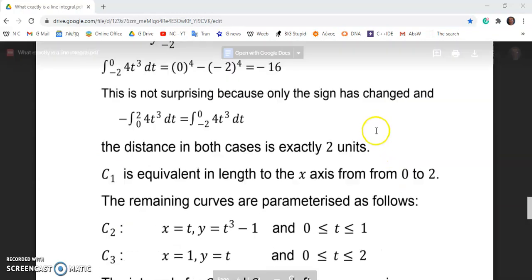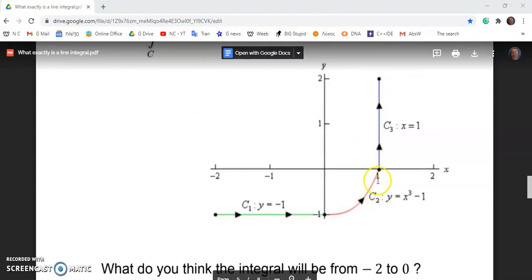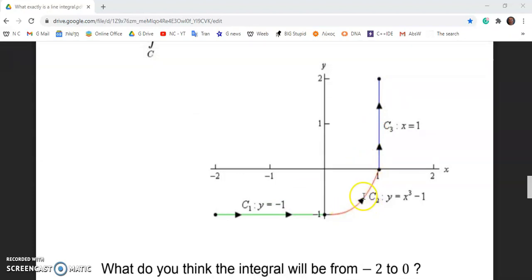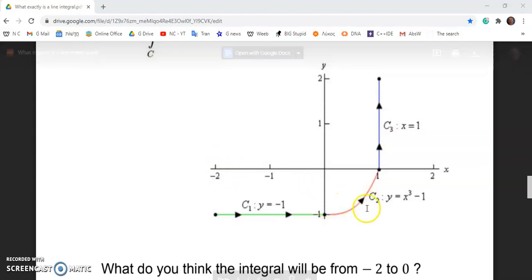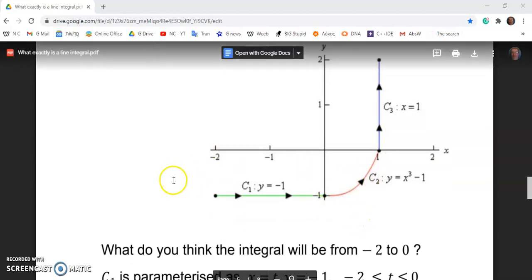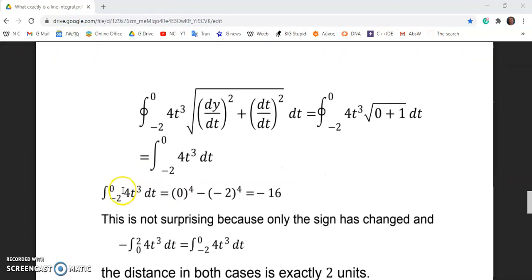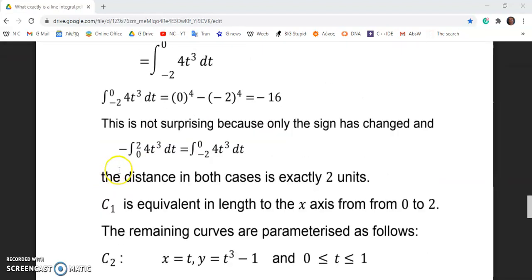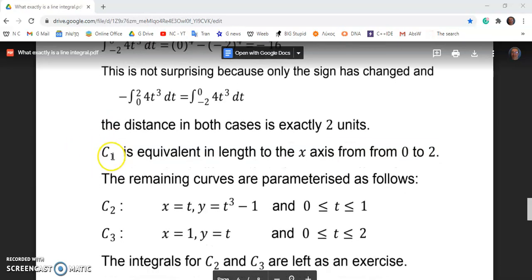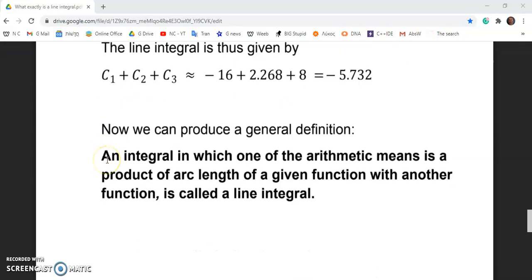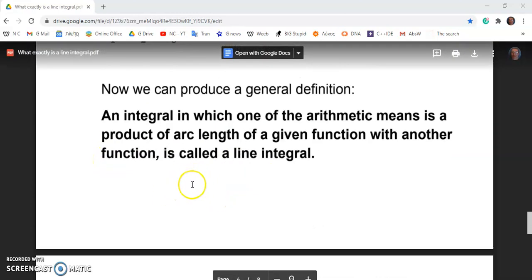You might ask yourself initially how the second one here could be a positive value. Well, because the integral actually being evaluated isn't this curve itself, but 4x cubed along this curve. So the idea about if you're integrating a value beneath the x axis being negative is no longer the case, negative or positive above, is no longer the case with line integrals.